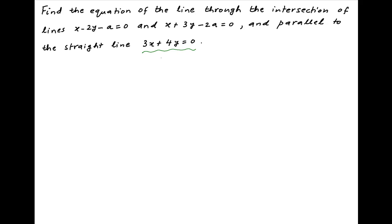The given line 3x plus 4y is equal to 0 can be written as 4y is equal to minus 3x, or y is equal to minus 3 upon 4 times x. Therefore, the gradient of this line is equal to the coefficient of x, which is equal to minus 3 upon 4.